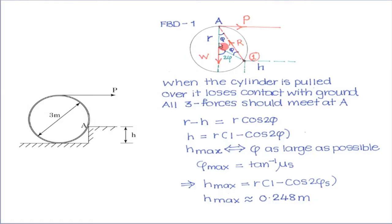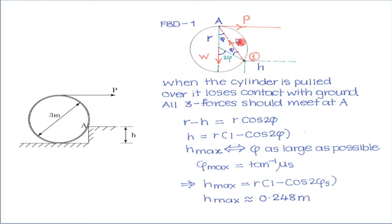Why does the reaction force pass through A? The force on this body acts at three points: the weight acts through the center, the body is lifted off so the ground normal reaction is disregarded, and the horizontal force P is applied at the rim. For the wheel to be in equilibrium, W and P intersect at point A. If the reaction did not pass through A it would have a line of action not through A, and the moment it creates about A could not be balanced. Therefore, for equilibrium, the reaction must pass through A.